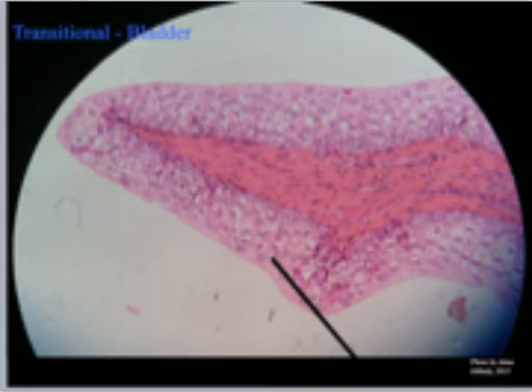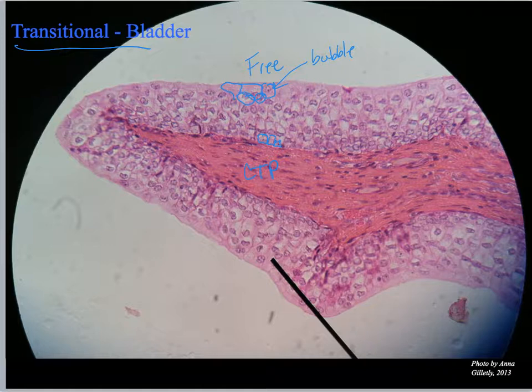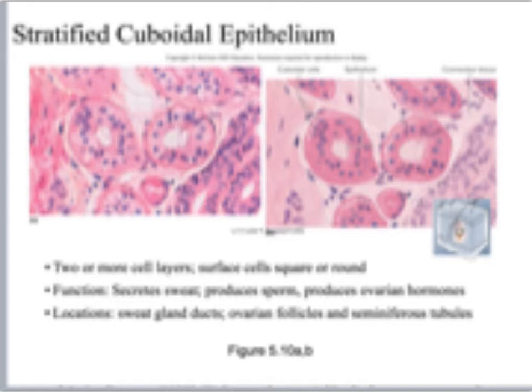Here is an actual slide of the bladder that we use in our on-campus A&P labs. Right there is my connective tissue and here is my free edge. I can see my roughly cuboidal to columnar shaped cells, and then over here I've got big bubble-shaped cells. Because the apical cells are bubble-shaped, we call this transitional epithelium, and we find it in the bladder, ureters, and urinary tract.